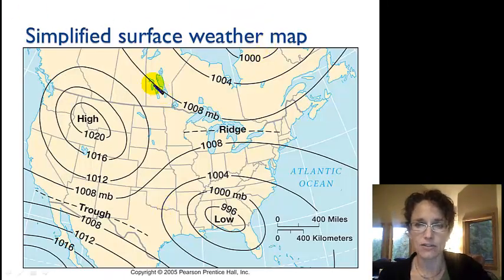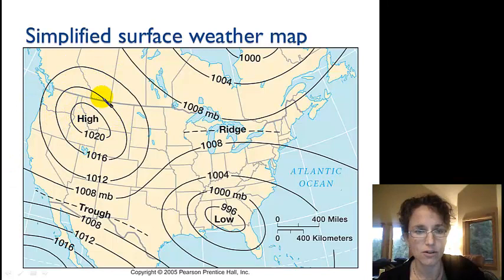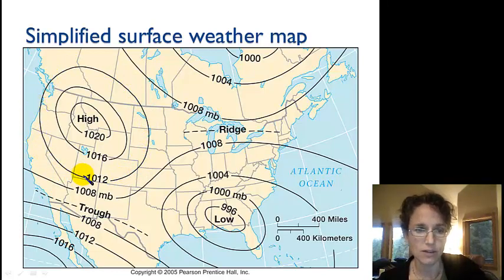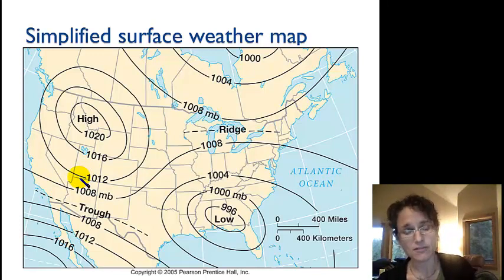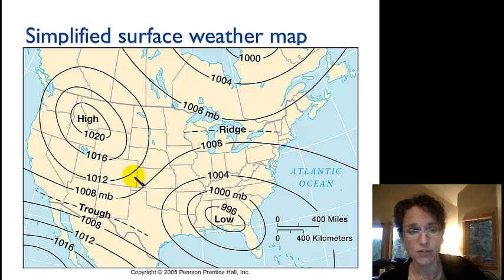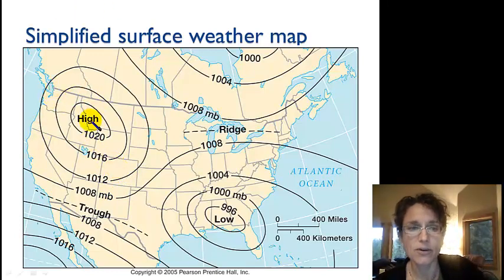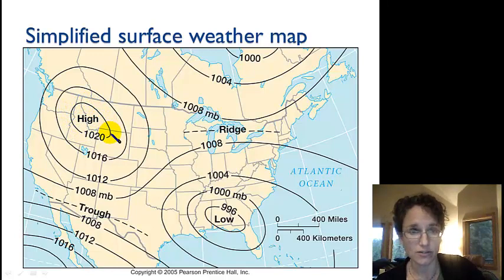Let's have a look at a surface weather map. This is a really simplified one from a textbook where we have a high pressure system here over the northwestern United States and a low pressure system here over the southeastern United States. These black lines are what we call isobars — lines of equal air pressure at the surface. These air pressure lines have been normalized for elevation, representing lines connecting points of equal air pressure at sea level.